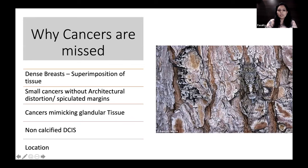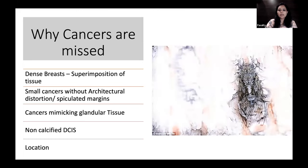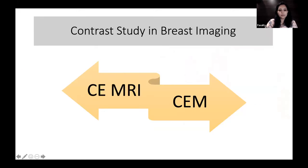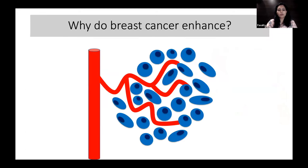Contrast imaging removes the background superimposed tissue, and the cancer tissue stands out as an enhancing mass or abnormality. We have two contrast studies in breast imaging that are widely used: contrast enhanced MRI and contrast enhanced mammography.